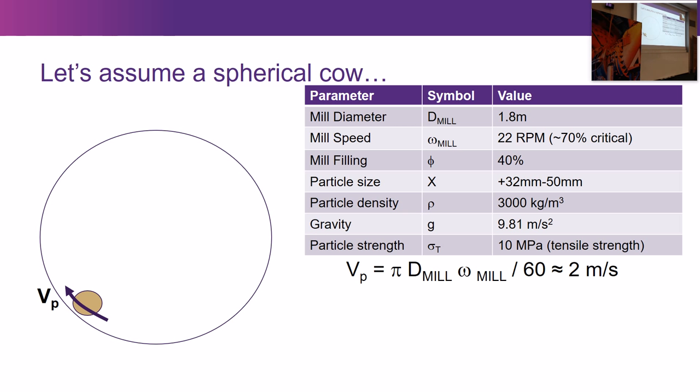It's a small pilot mill, but on the basis of these parameters we can ask some questions we can answer on paper. The first is: if I'm a particle attached to the shell as it rotates, how fast will I be going? That's simply given by the speed of any point on the shell as it makes its revolutions. Using that formula, it comes out to about 2 metres per second for Malcolm's Mill.